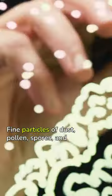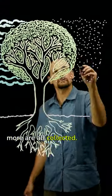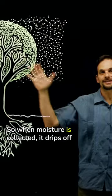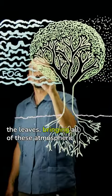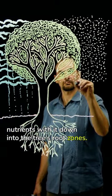Fine particles of dust, pollen, spores, and more are all collected. When moisture is collected, it drips off the leaves, bringing all of these atmospheric nutrients with it down into the tree's root zones.